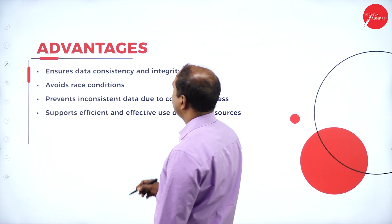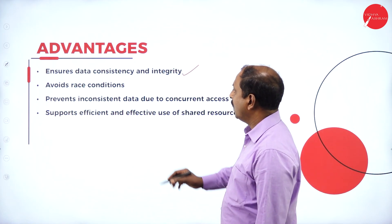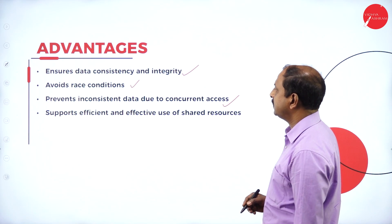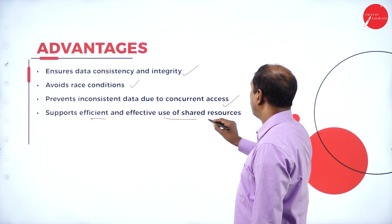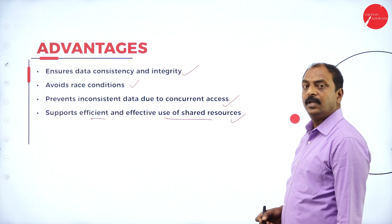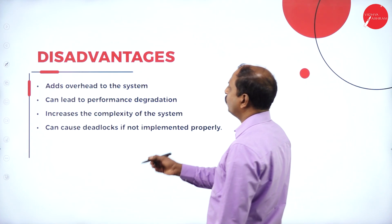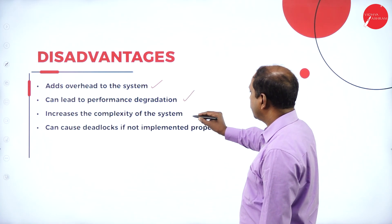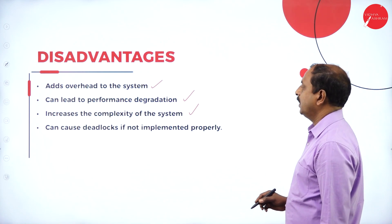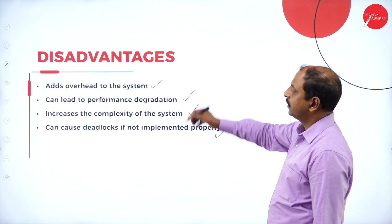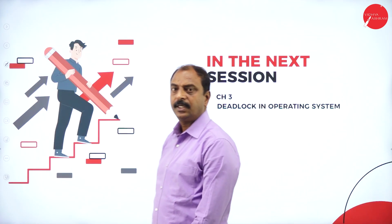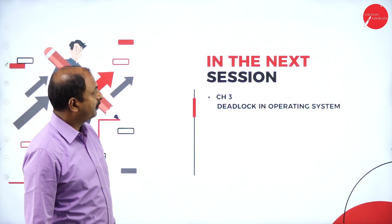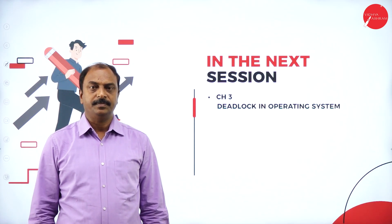The advantages of semaphores are: they ensure data consistency and integrity, avoid race conditions, prevent inconsistent data due to concurrent access, and support efficient use of shared resources. The drawbacks are: they add overhead to the system and can lead to performance degradation, and they increase the complexity of the system and can cause deadlocks if not implemented properly. In this session we discussed process management, and in our next session we will talk about deadlocks in operating systems. Thank you very much.